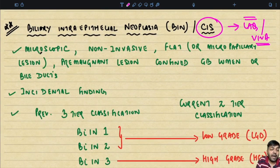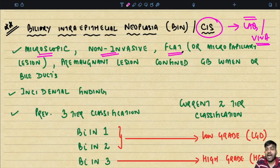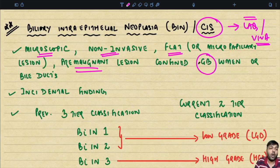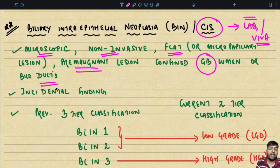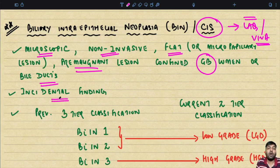BIN is a non-invasive flat or micropapillary lesion — a premalignant lesion confined to the gallbladder lumen or the bile ducts. It is a carcinoma in situ lesion and an incidental finding because it is a microscopic lesion you cannot see visually.